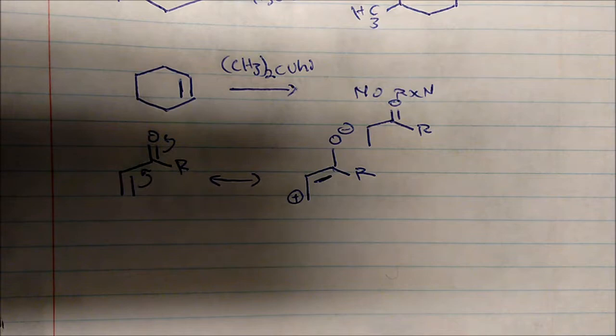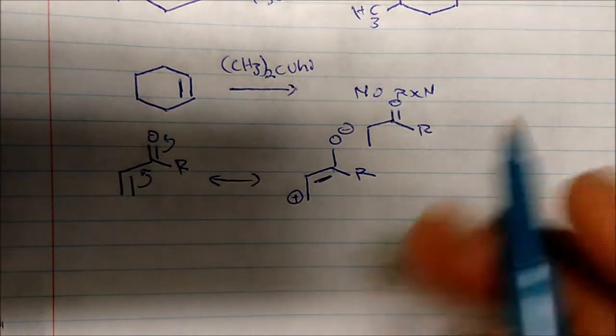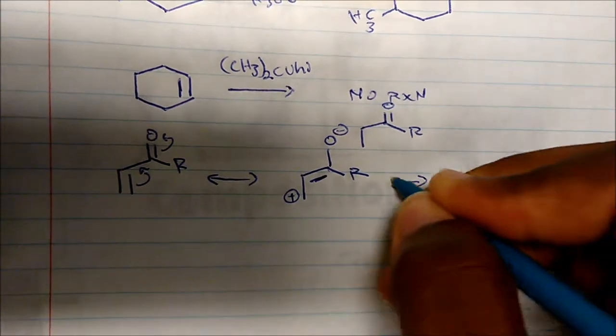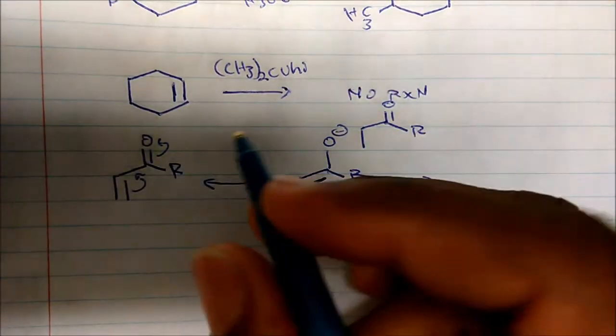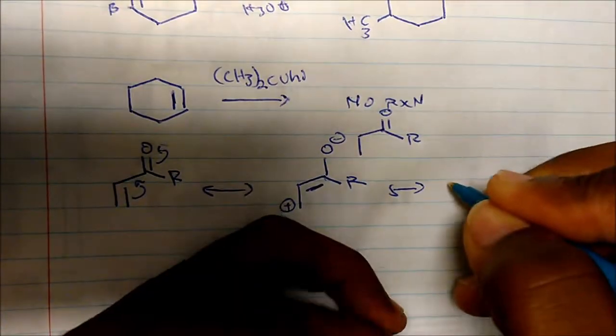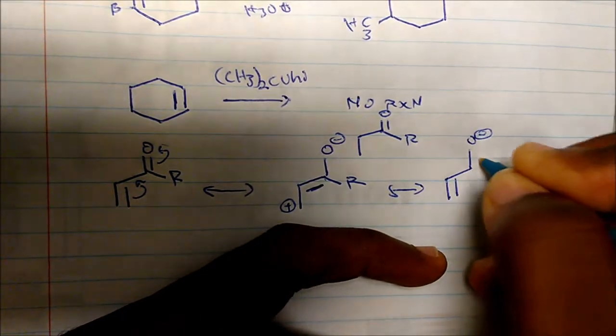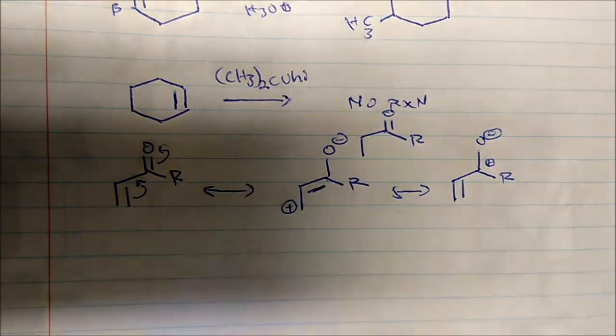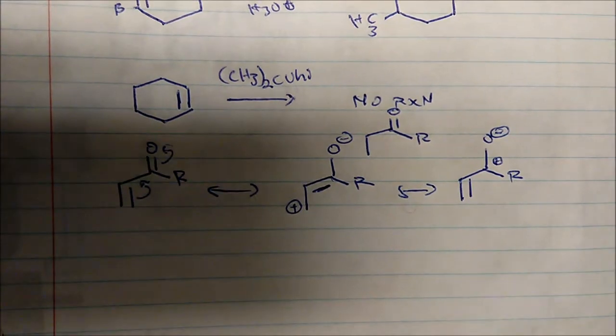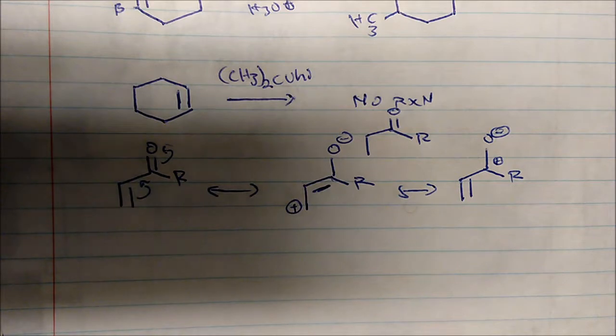We could draw a plethora of resonance forms. Coming from this, I could just simply move up these electrons without even touching these electrons right here. So another resonance form of this would be an O minus with my plus charge here.